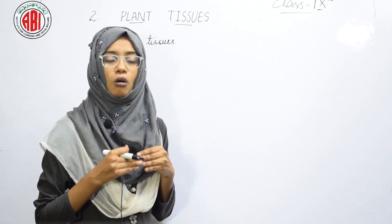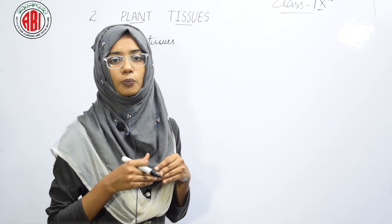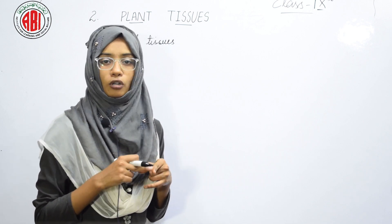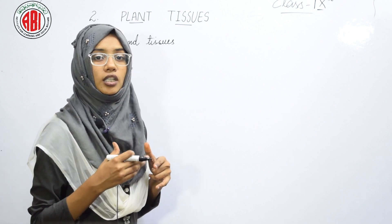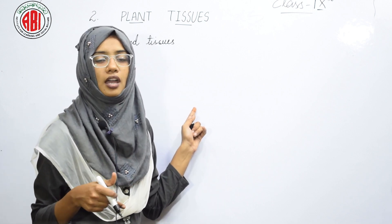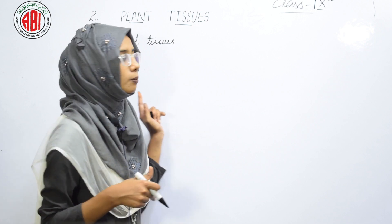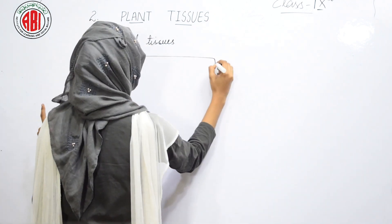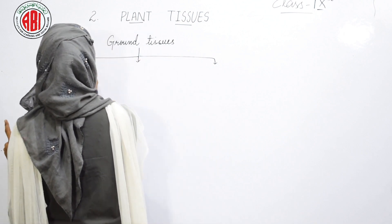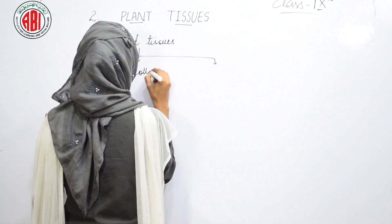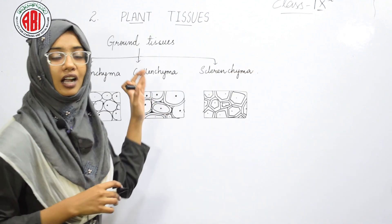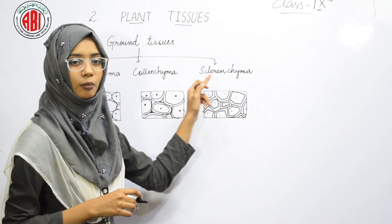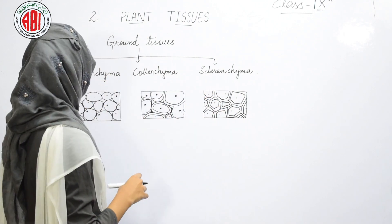Certain ground tissues are also involved in carrying out the main important processes of the plant body, like photosynthesis. The ground tissues are classified into three main types: parenchyma, colenchyma, and sclerenchyma.